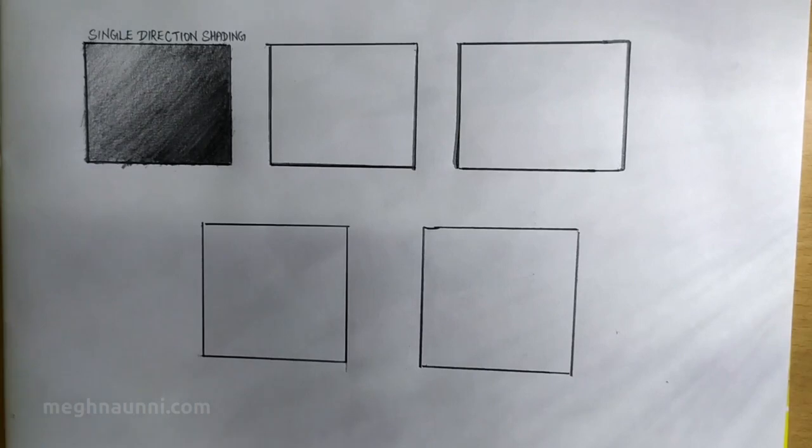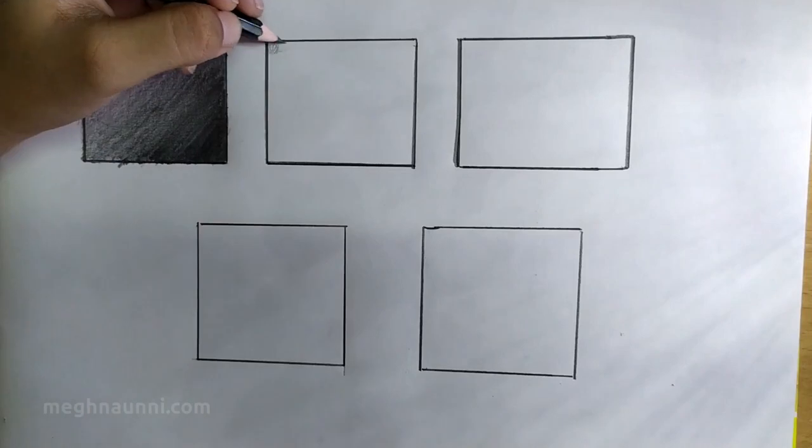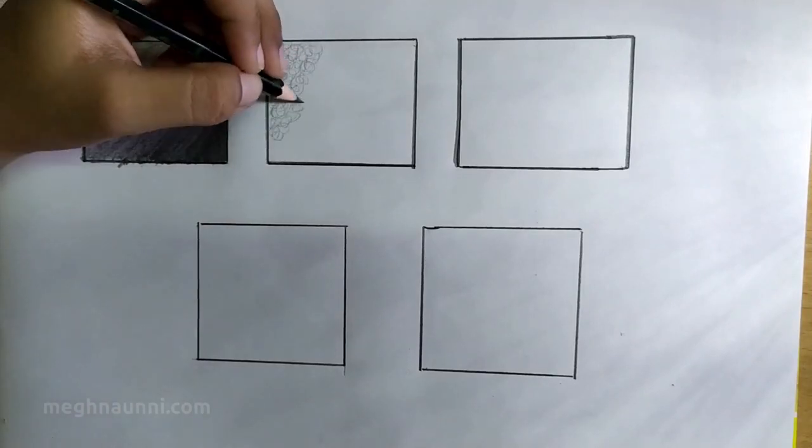The next method is scribbling, which is a really fun method. Take your pencil and scribble lightly and evenly throughout the area. Leave gaps when doing the first layer.